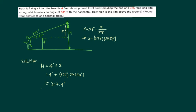Now using the sine, which is opposite over hypotenuse, we can see the x in this figure here is 375 times sine of 54 degrees. Adding the 4 feet gives us the height of the kite.